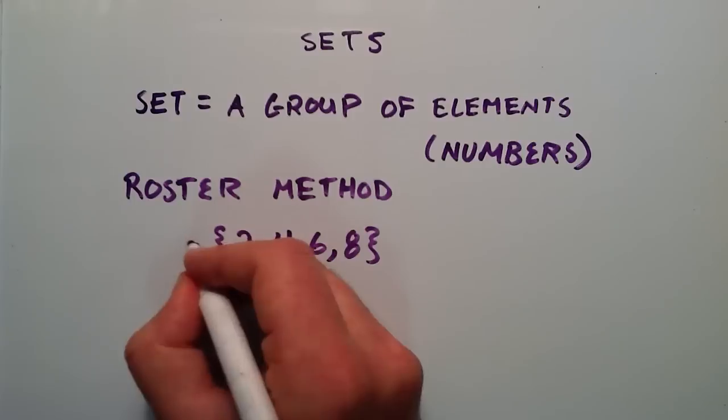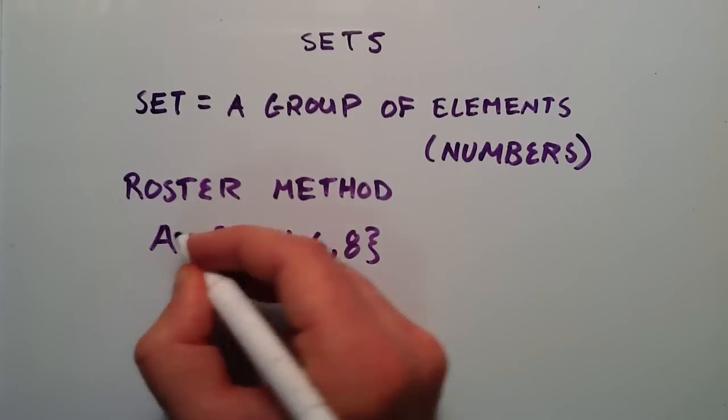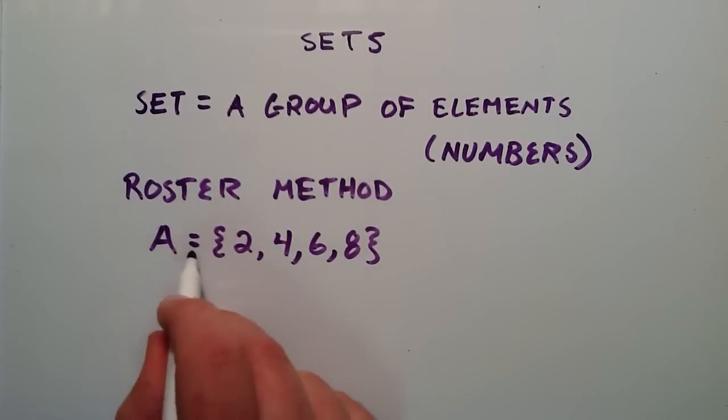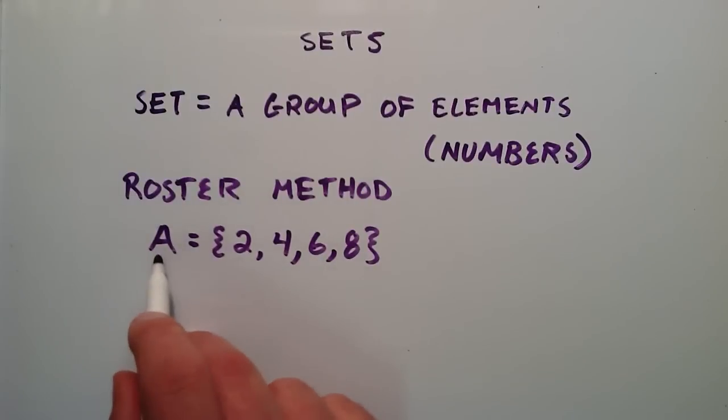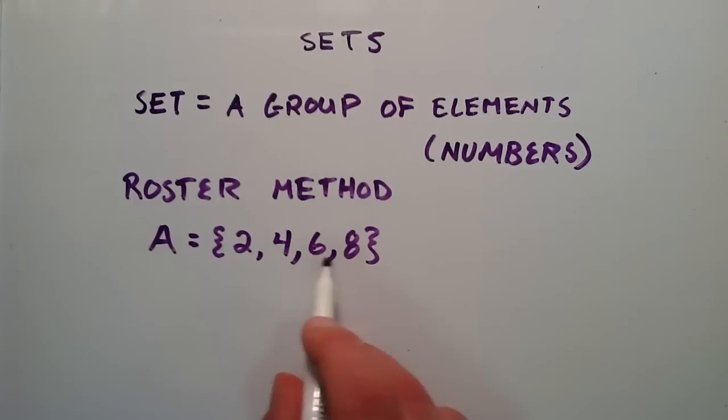You can say that this equals A. By doing equals A here, we're naming this set, we're naming it A. So this notation says that set A contains the elements 2, 4, 6, and 8.